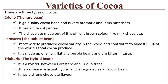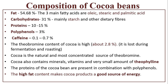The second type is Forastero — the robust bean. It is the most widely produced cocoa variety in the world and contributes to almost 95% of the world's total cocoa produce. It is made up of small, flat, and purple beans and is bitter in taste. Trinitario is the hybrid bean — a hybrid between Forastero and Criollo trees. It is disease-resistant and regarded as a flavor bean with a strong chocolate flavor.